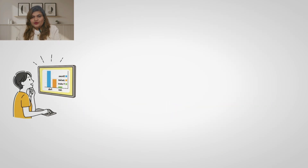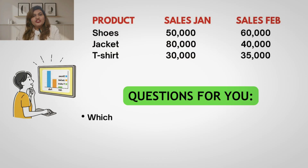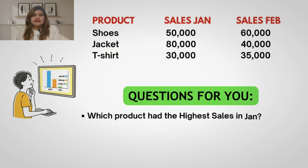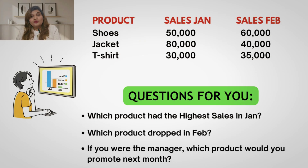Mini hands-on activity. Let's do a quick activity together. Imagine a data set from a small shop. Questions for you: Which product had the highest sales in January? Which product dropped in February? If you were the manager, which product would you promote next month? Type your answers in the comments below. This is analytics in action — simple data, simple decisions, no coding required.